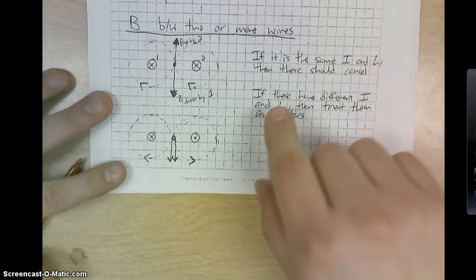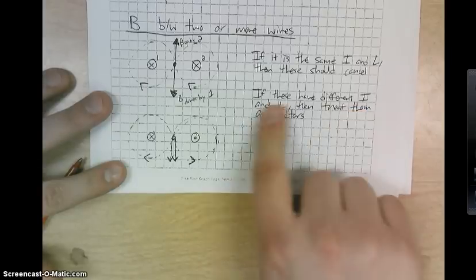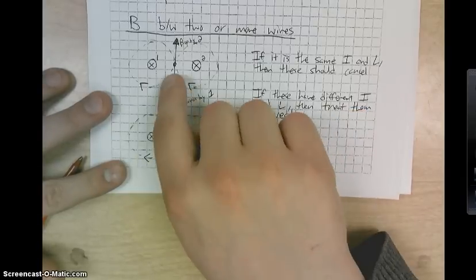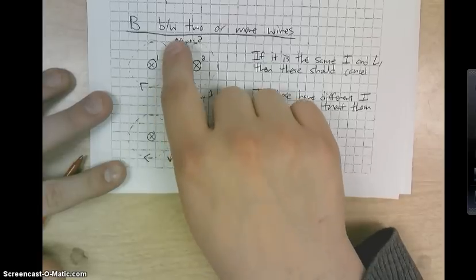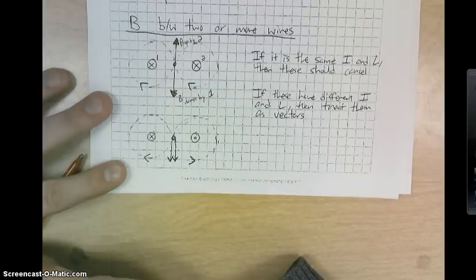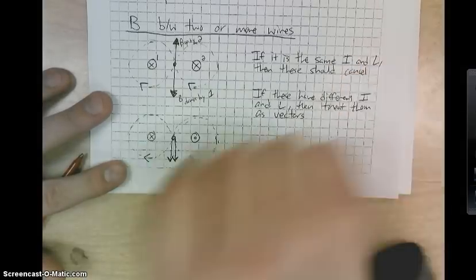However, if they have different currents and different lengths, then we have to treat them like vectors. So if we have a situation like this, we'd have to subtract the two fields that are created by those different wires, if the current or the length was different.